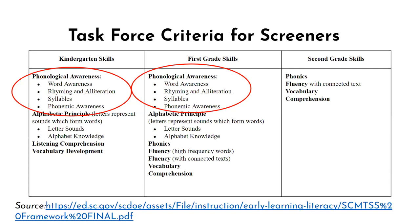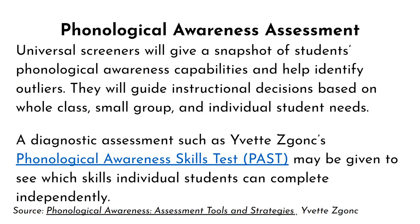One way to identify students who are struggling with phonological awareness is to administer your school's approved universal screener. Phonological awareness areas assessed by state-approved universal screeners include word awareness, rhyming and alliteration, syllables, and phonemic awareness. Universal screeners will give a snapshot of students' phonological awareness capabilities and help identify outliers. You may follow up with a diagnostic assessment, such as Yvette Zonk's Phonological Awareness Skills Test, to get more specific information and determine which skills need to be taught as a whole group, small group, or individually.